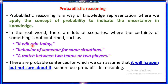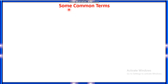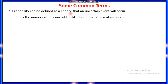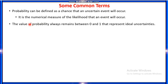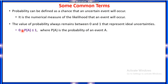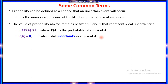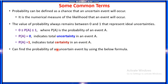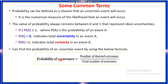For example, it will rain today — it may happen, but we may also come to know that it will not rain today. Some common terms used in probabilistic reasoning: probability can be defined as a chance that an uncertain event will occur. It is a numerical measure of the likelihood that an event will occur. The value of probability always remains between zero and one, representing ideal uncertainties. If P(A) equals zero, it indicates total uncertainty in event A. If P(A) equals one, it indicates total certainty in event A. We can find the probability of an uncertain event using the formula: probability of occurrence equals number of desired outcomes divided by total number of outcomes.